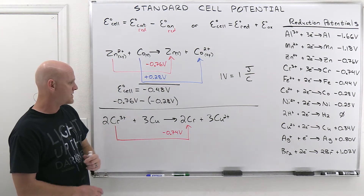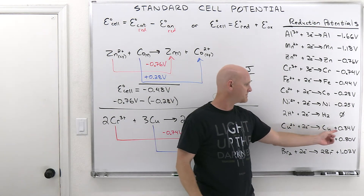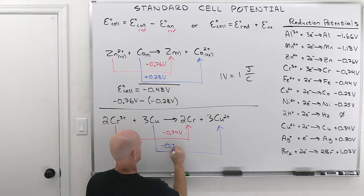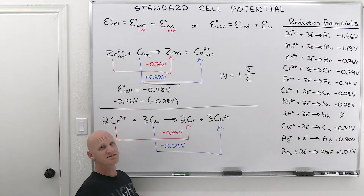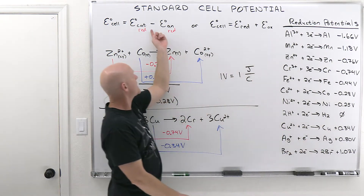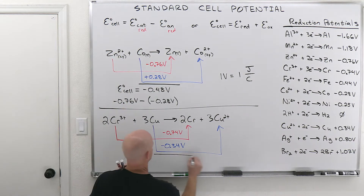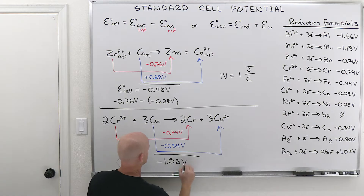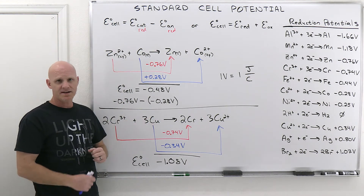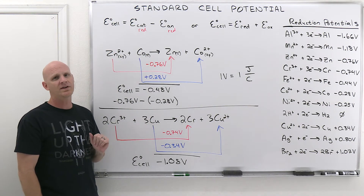Still using −0.74 volts for chromium. For the copper half reaction, we're going from Cu → Cu²⁺. Cu²⁺ + 2e⁻ → Cu is +0.34 volts, so Cu → Cu²⁺ has an oxidation potential of −0.34 volts. Adding: −0.74 + (−0.34) = −1.08 volts for E_cell. Because it's negative, the reaction as written is not spontaneous under standard conditions, but the reverse reaction would be.